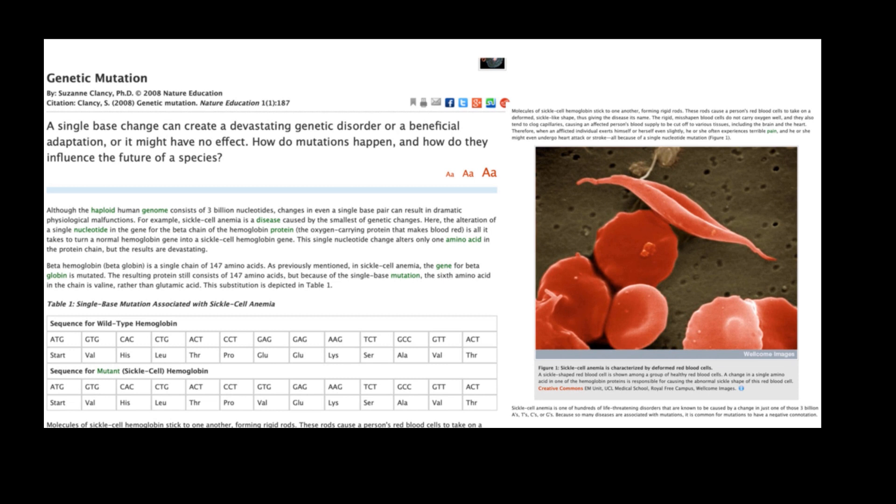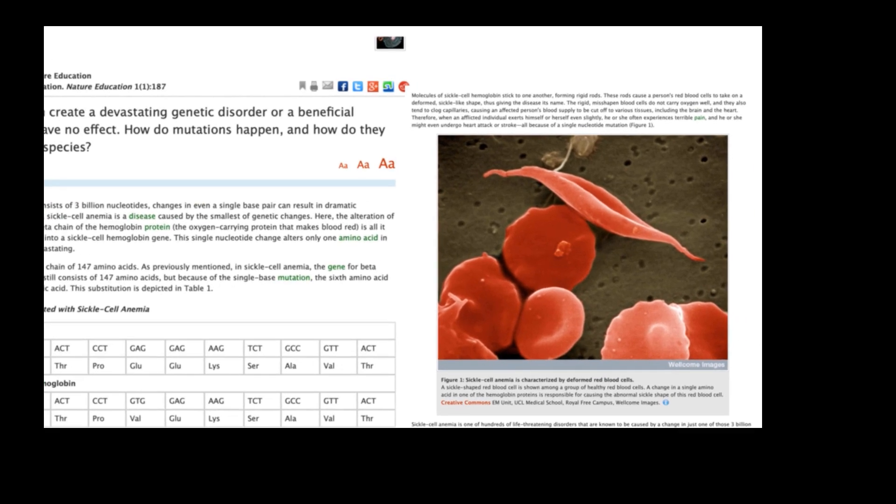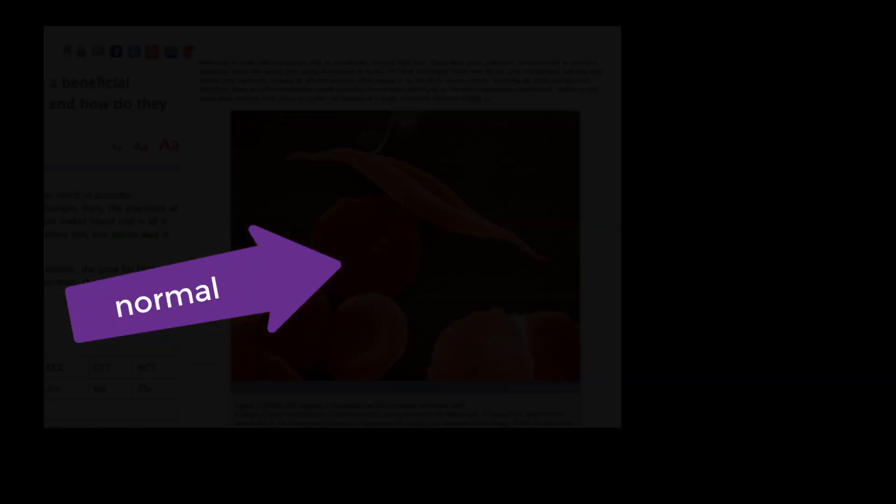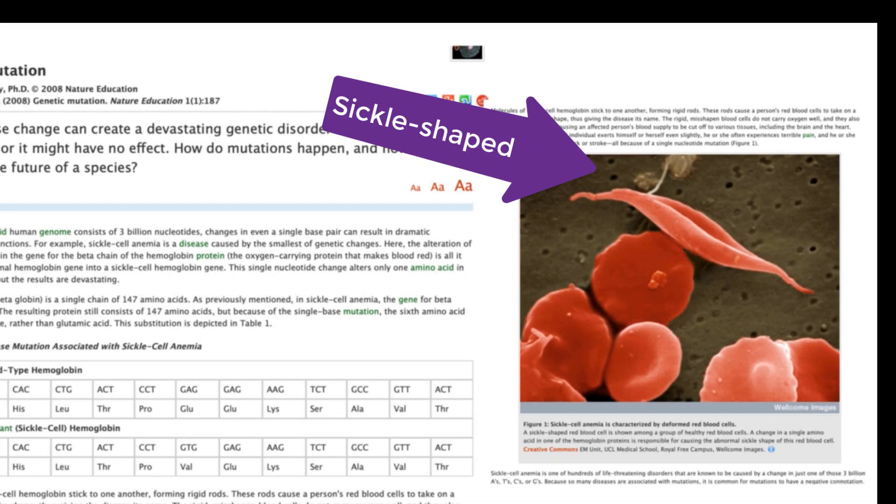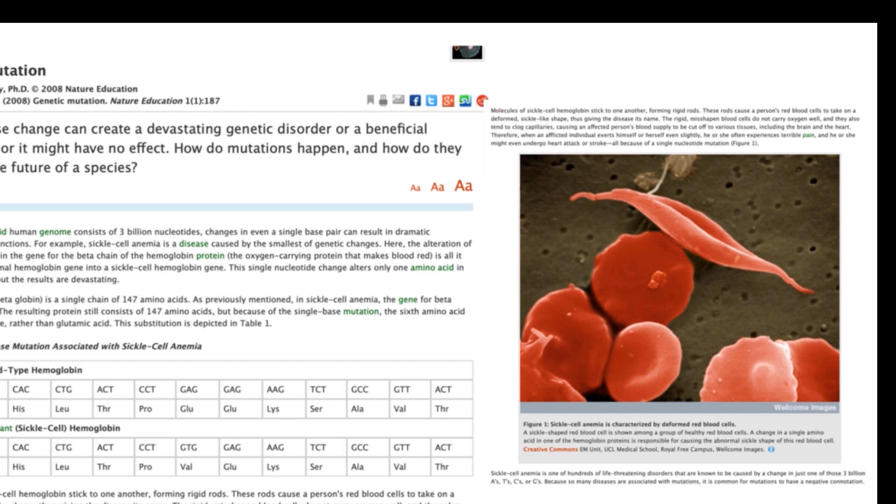And this single DNA change results in a change in the folding structure of the hemoglobin, such that the normal red blood cells bend or become sickle-shaped, which ends up resulting in a wide range of circulatory problems with those individuals that have this particular genetic trait.